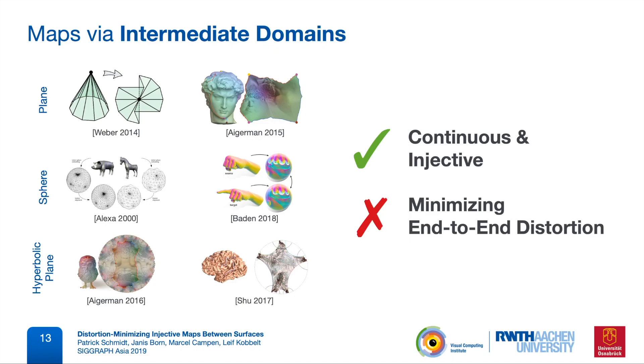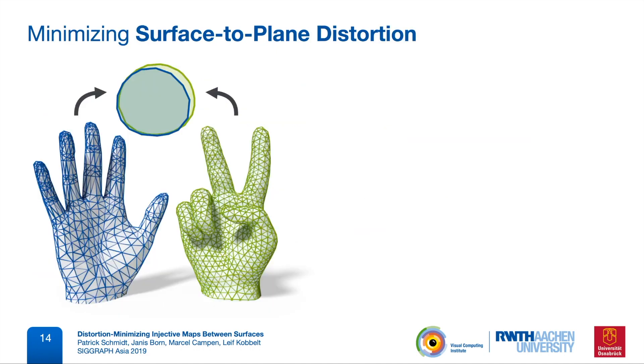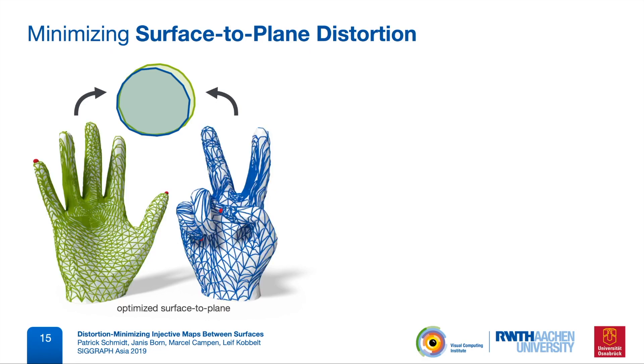To illustrate the difference, here we create a map via two planar parameterizations, both optimized for surface-to-plane distortion. We now use this map to swap the wireframes of both meshes, and we can already see that there is high distortion in the map. In particular, during the optimization, there was no incentive to correctly align the fingers of both hands.